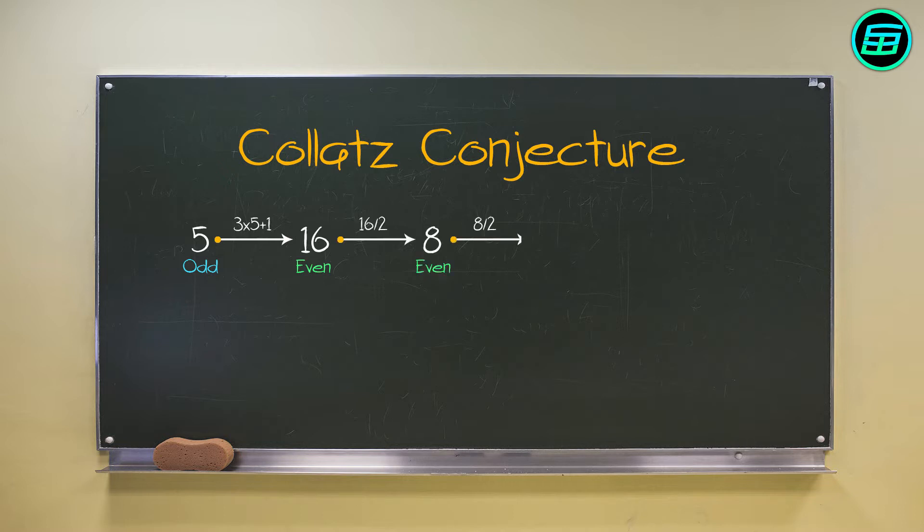Dividing by 2 again gives 4. Dividing by 2 again gives 2. And finally, dividing this by 2, we end up with 1.